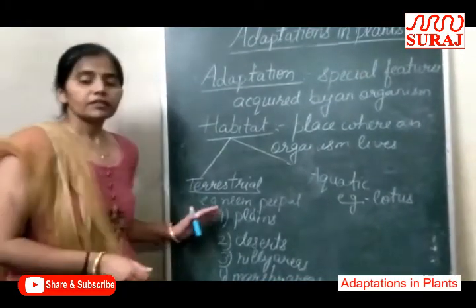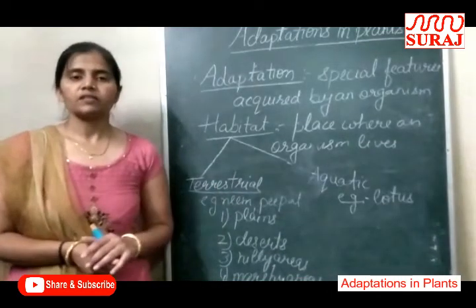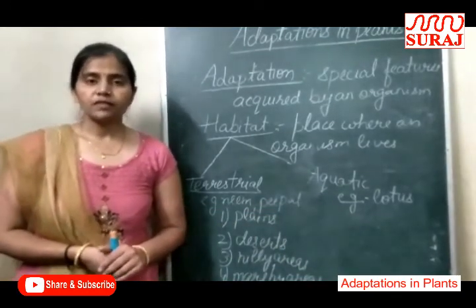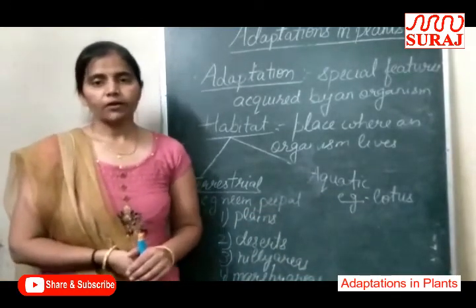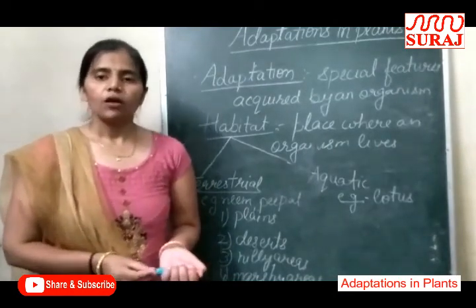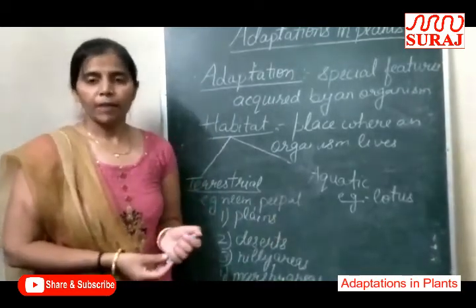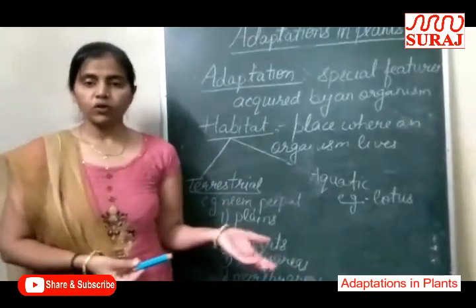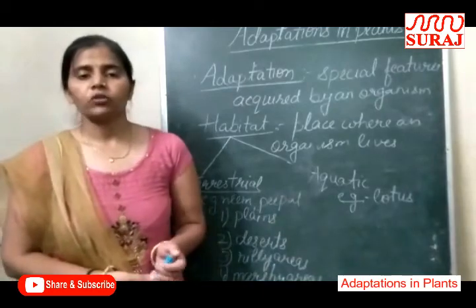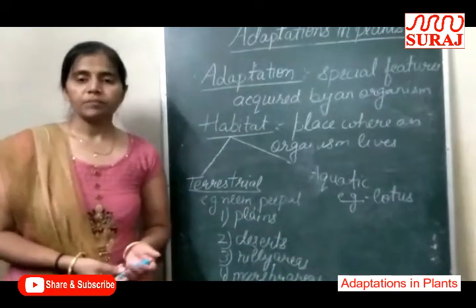Plants that grow in Plains — vo plants jo plains mein, samatal ilakon mein grow kiye jaate hain. The climate of Plains is hot during summer and cold during winter. The branches of these plants are many, and leaves fall during the autumn season. Examples: Neem, Peepal, etc.